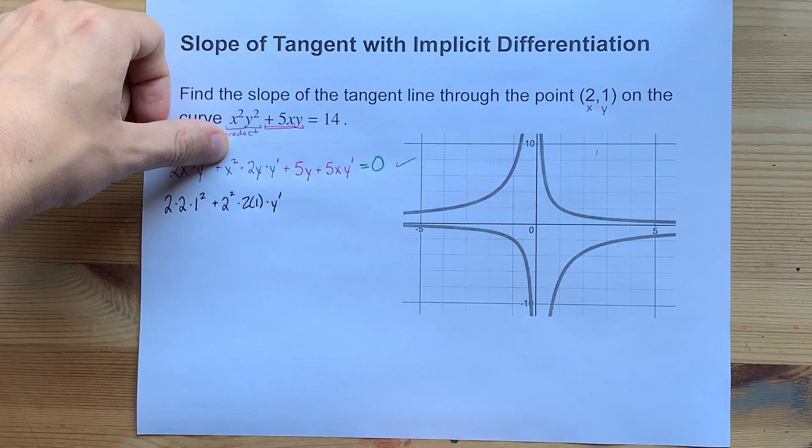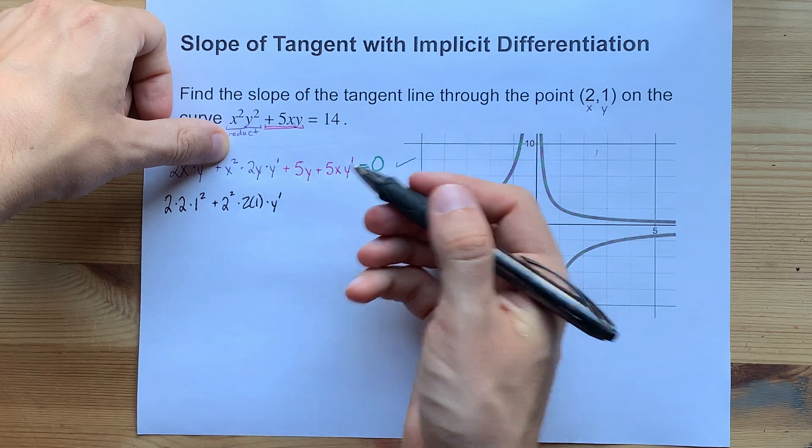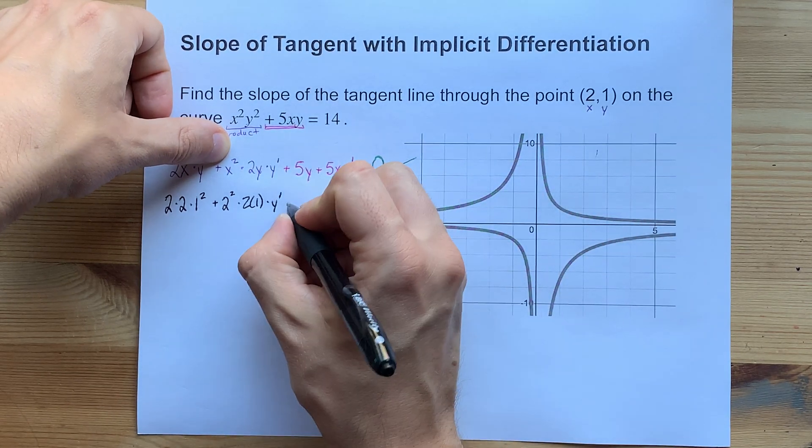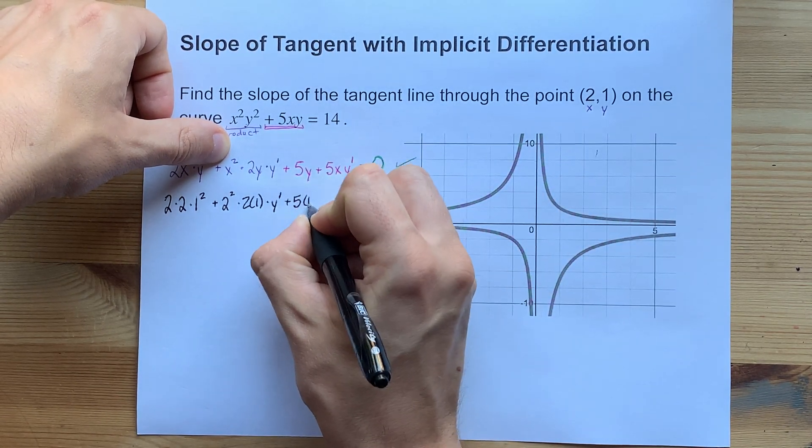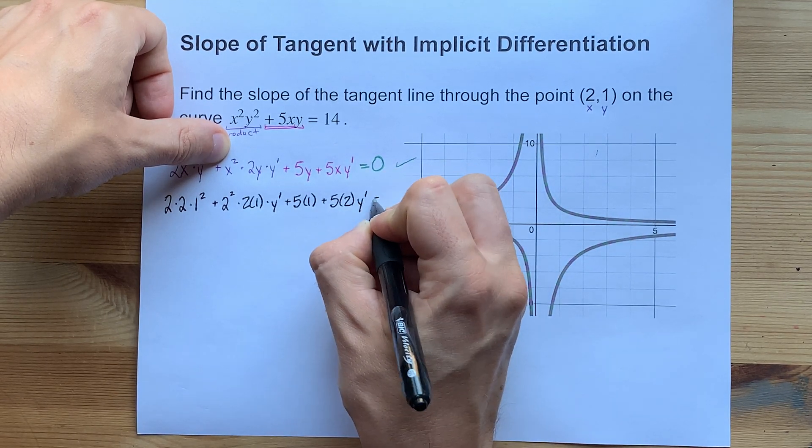We don't know what y prime is though. That, by definition, is the slope of the tangent at whatever point we're plugging in. Plus 5 times y plus 5 times x times an extra y prime.